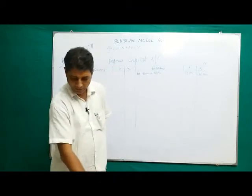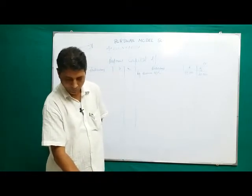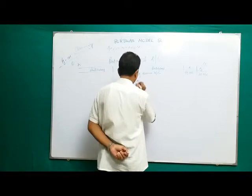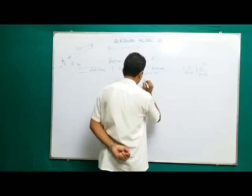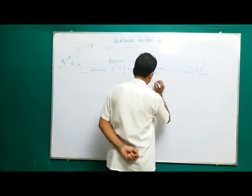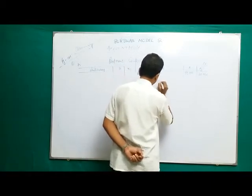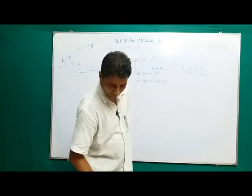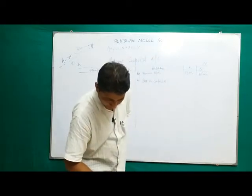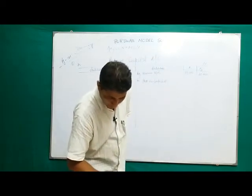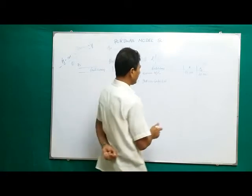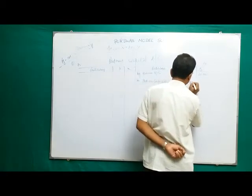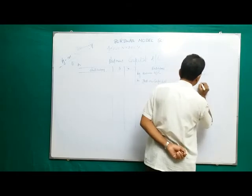Next on the credit side: 'By Interest on Capital' at 5 percent. Onuba's interest on capital is 90,000 into 5% equals 4,500. Kajol's interest on capital is 60,000 into 5% equals 3,000.